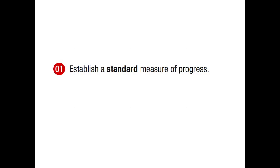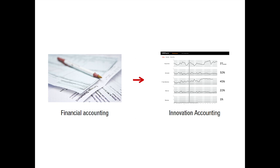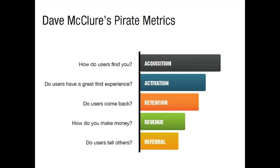The first thing is we don't really need lots of numbers; we really need a standard measure of progress. Much like we have standard financial statements to measure established companies, we need a set of standard metrics to measure startups. At Spark 59, we standardize our measure of progress around five key macro metrics, first described by Dave McClure, which a lot of you in the room should already be familiar with.